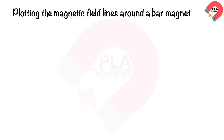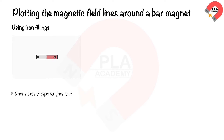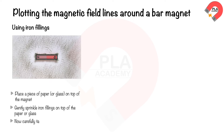Plotting magnetic field lines around a bar magnet using iron filings: place a piece of paper or glass on top of the magnet, gently sprinkle iron filings on top, then carefully tap the paper or glass to allow the iron filings to settle along the field lines.